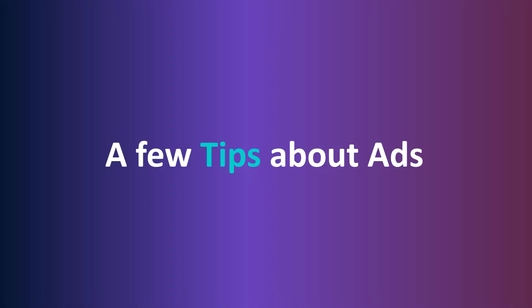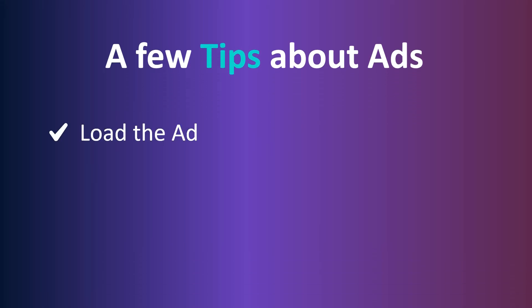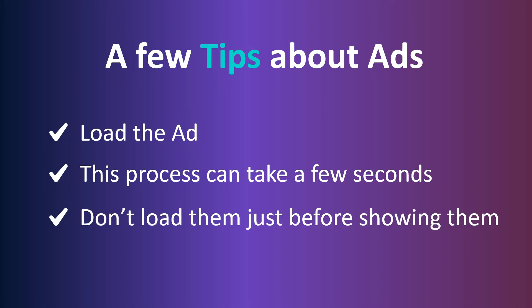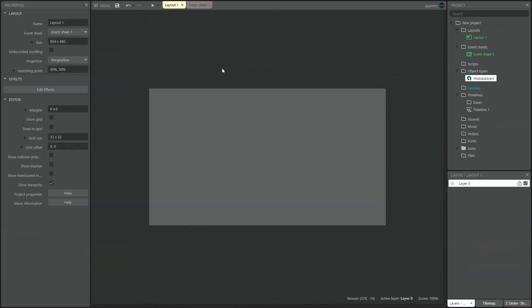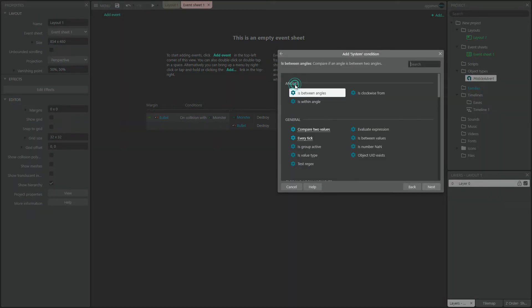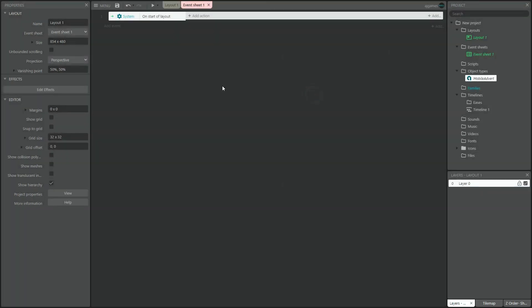Here is how ads work on Construct. In order to show ads to our player, we need the game to load the ads in advance. This process can take a few seconds, so you need to take this into consideration when designing your game. You shouldn't load the ad right before showing it, because depending on the player's internet connection, it may take too long to load, and either the ad won't show, or it could make the experience a little annoying for the player. In this case, since I want the ad to appear at the end of the layout, I can load the interstitial at the beginning — that way I give it enough time to load.